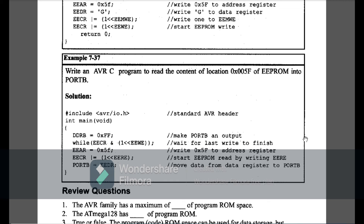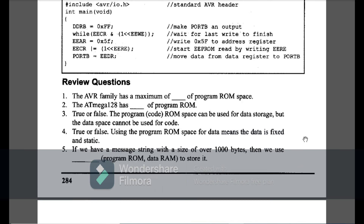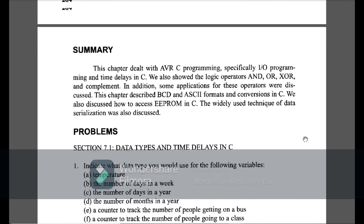Example 7-37: read the content at location 0x005 in EEPROM and display it on Port B. Port B is declared as output. The while condition waits for the last write to finish. Then EEAR = 0x005 sets the address, EECR |= (1<<EERE) starts the EEPROM read, and the value read appears on Port B. With this example, Chapter 7 examples come to an end.